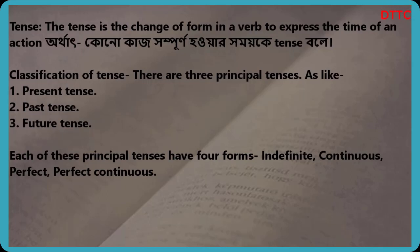Classification of Tense. There are three principal tenses: present tense, past tense, and future tense. Each of these principal tenses has four forms: indefinite, continuous, perfect, and perfect continuous.